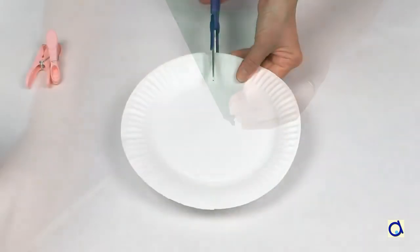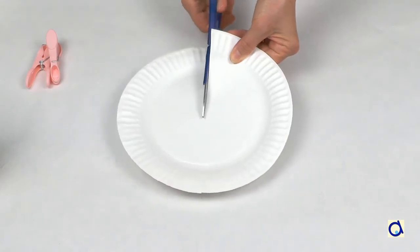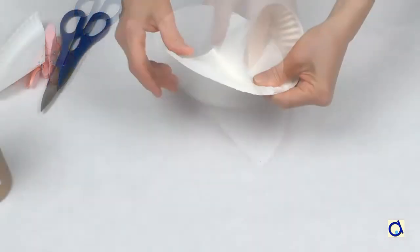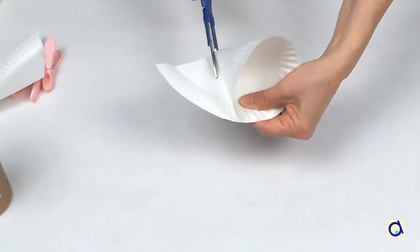Take a flexible paper plate and remove about a quarter to a third of the plate. Adjust if necessary. Do as if you cut a piece of pie.